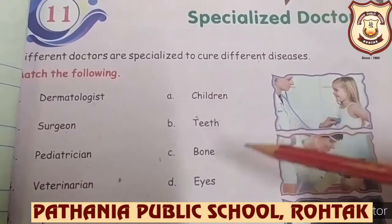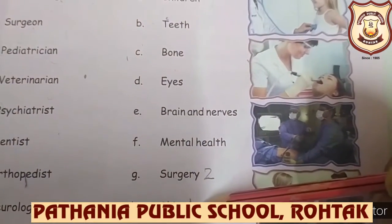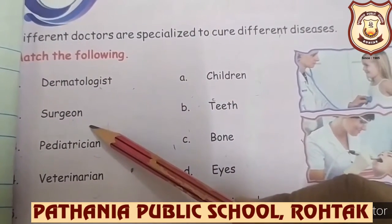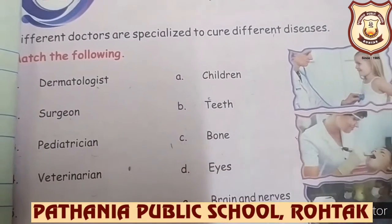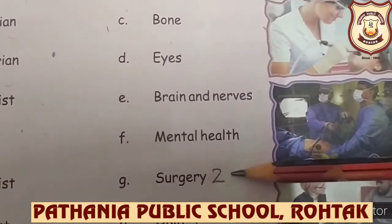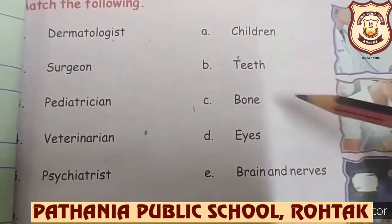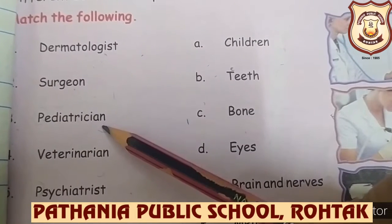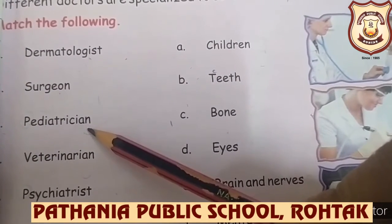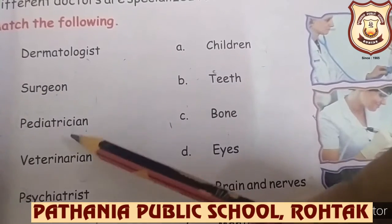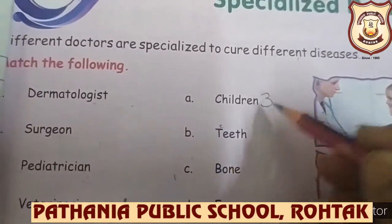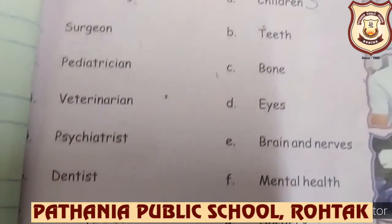Number two: Surgeon. Surgeons perform operations on patients suffering from diseases and injuries — medical operations. So number two is matched with 'surgery.' Number three: Pediatrician. A pediatrician provides medical care for infants, children, and young adults — from birth until age 18. So for number three, you have to write 'children.'